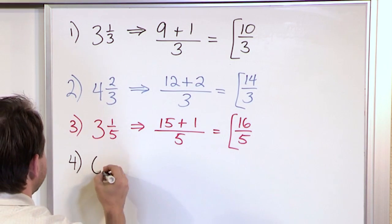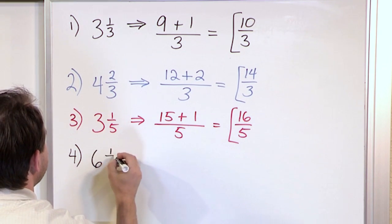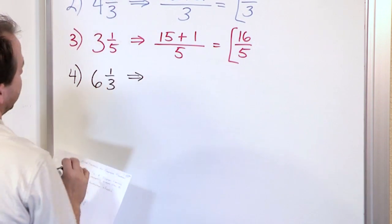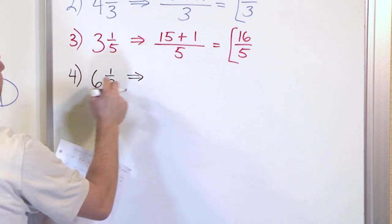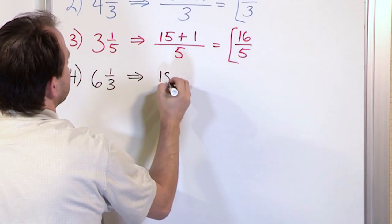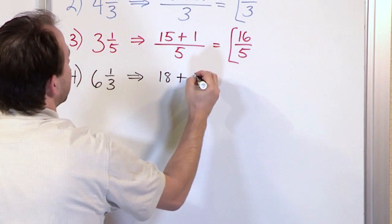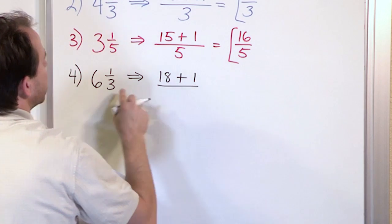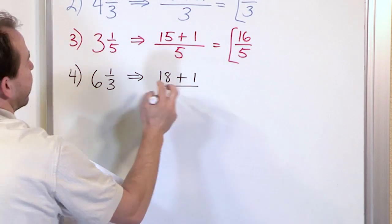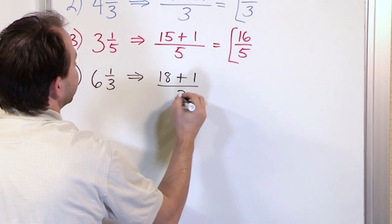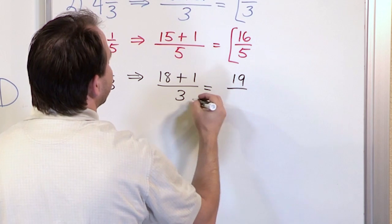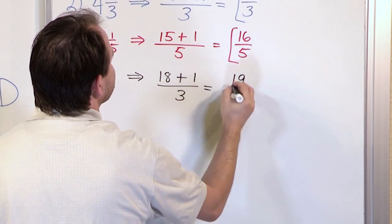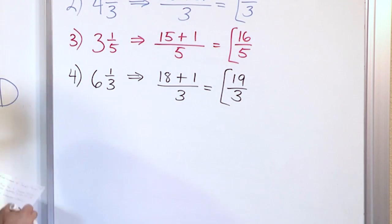Next problem: six and one third. Three times six gives me 18, plus the one on the top. The bottom number is a three and that stays the same. 18 plus one is 19, three remains on the bottom. The final answer is 19 thirds.